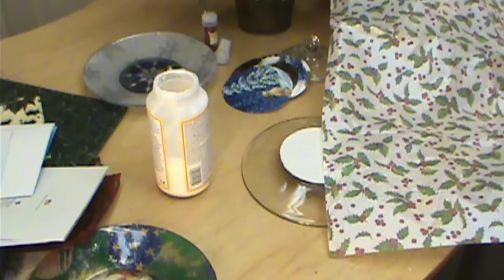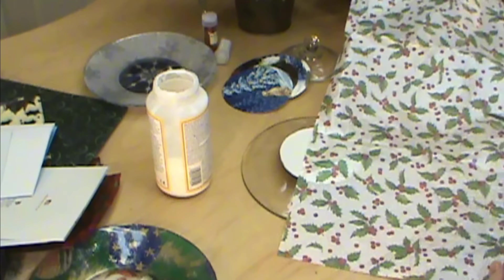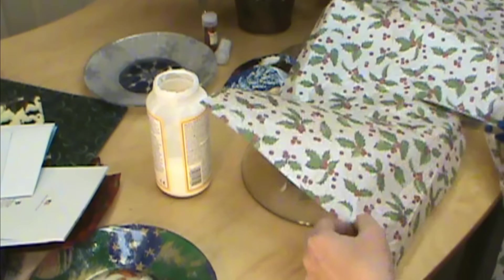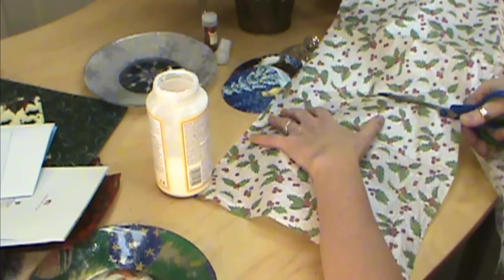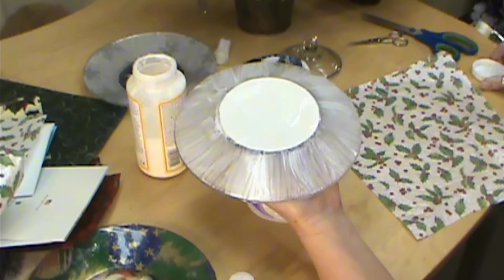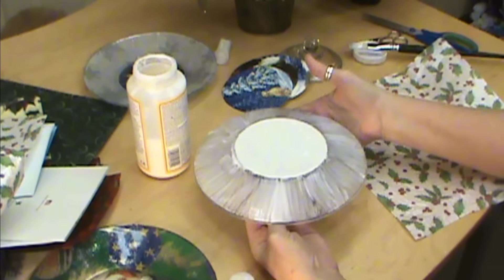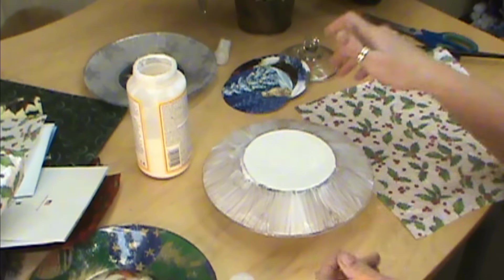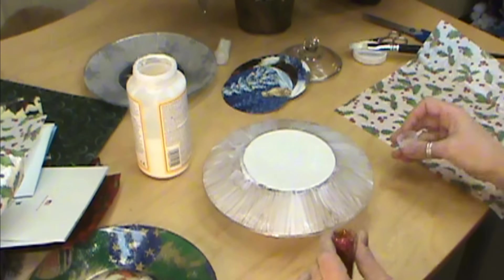Then we're going to put the Mod Podge on our plate and then we'll start to put our tissue on. I brushed this and I try not to get it on this rim right here, just on this very edge. If you get your fingerprints on the other side, try and wipe it off while it's still wet. I'm going to set this up a little bit on anything to kind of elevate it.